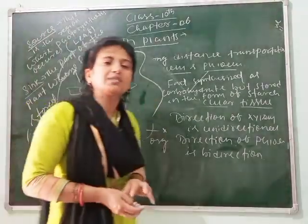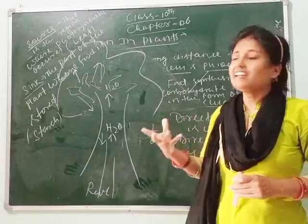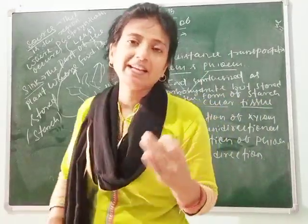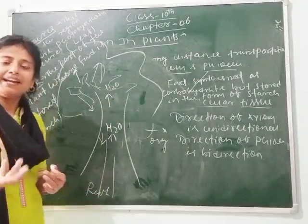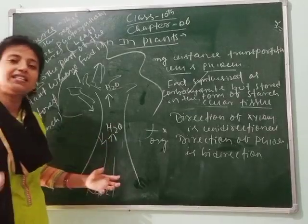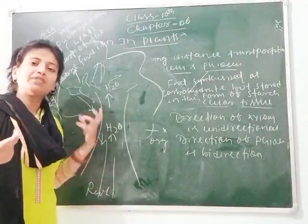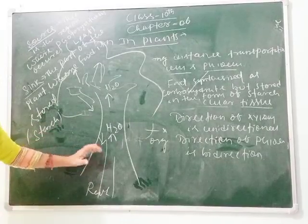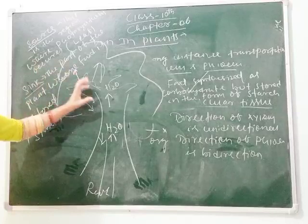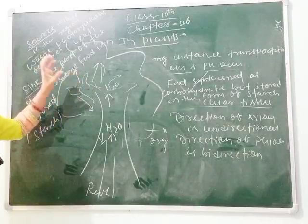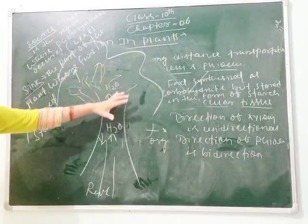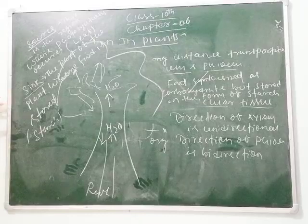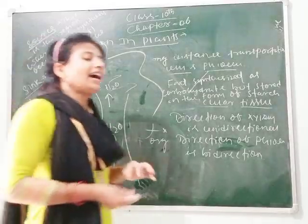Now, xylem not only transports water but also transports all the minerals present inside the soil, like calcium, magnesium, zinc, and molybdenum. Nitrogen is captured by the phloem directly from the air. The nutrients, water, and minerals are absorbed by the root, transported through xylem to different parts — especially to the leaf — where photosynthesis occurs. After photosynthesis, food is transported to different parts, and the remaining food is stored in the form of starch. This is how transportation occurs in the plant.